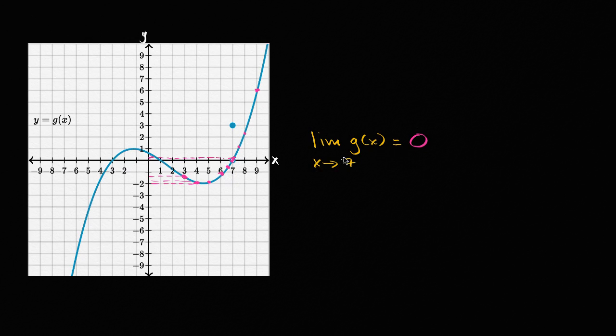And this is interesting, because the limit as x approaches seven of g of x is different than the function's actual value, g of seven, when we actually input seven into the function. When we actually input seven into the function, we can see the graph tells us that the value of the function is equal to three.